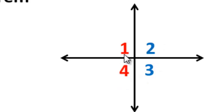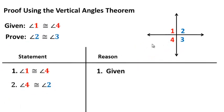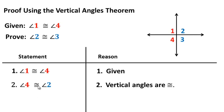But if we know that vertical angles are congruent, we can use this. So in my next line, I'm going to put that angle four is congruent to angle two, because vertical angles are congruent. Now take a look: both angle one and angle two are congruent to angle four. So if they're both congruent to four, they are congruent to each other, and that is the transitive property.